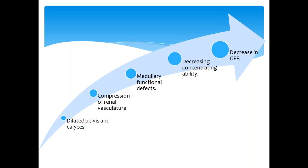Renal vasculature compression leads to functional defects — medullary functional defects. This leads to decreased concentrating ability of the kidneys, finally leading to decreased GFR. We know kidneys filter blood through a concentration gradient maintained by the blood vessels. When there is obstruction in the flow, dilated calyces compress the blood vessels, causing failure in the vascular gradient. So filtering and concentrating ability is reduced, leading to decreased GFR.